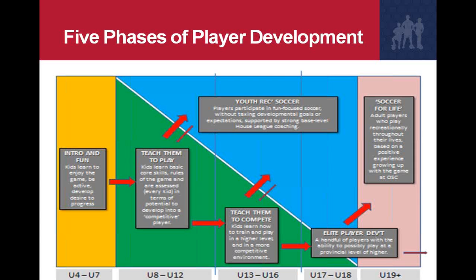There are essentially five phases of player development at the club. They begin at the introductory level, from under-4 to under-7, and progress through to adult recreational soccer. There are various levels of competition, from the house league to the open development, advanced development, and rep programs. At any point between the age categories of under-8 and under-18, players can move out of the competitive stream and into youth recreational soccer, where the focus is still on development, without some of the demands of more competitive programs.